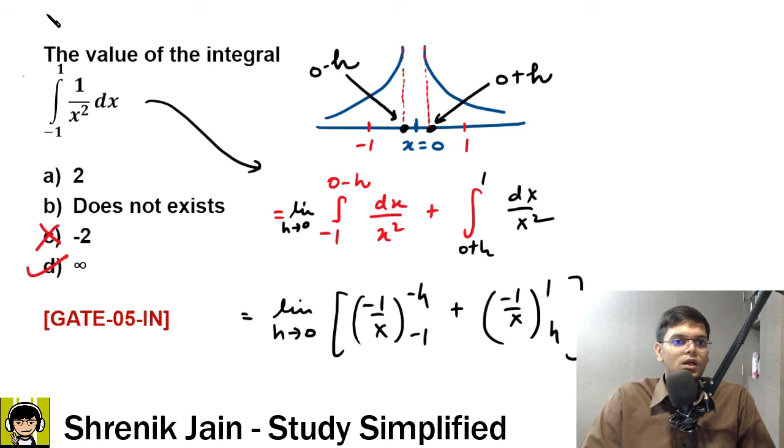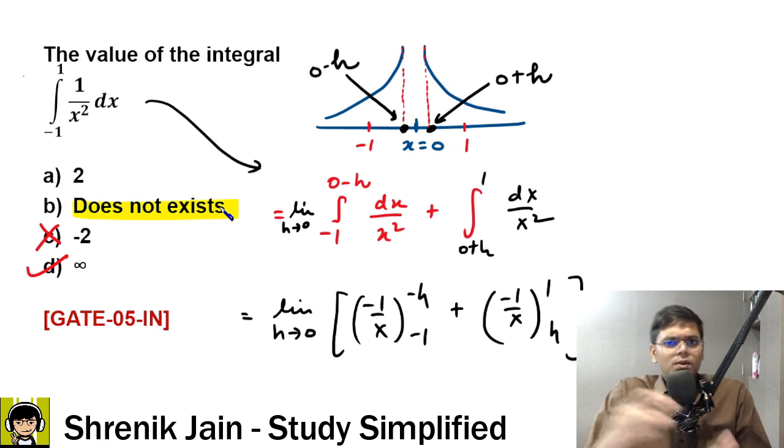Now you may also say 1 by 0 does not exist, but 'does not exist' is a vague thing. Vague means it can be infinity or minus infinity. But we have infinity as a specific version also, so be very specific. If specific versions are given, therefore 'does not exist' is not touched and infinity is touched.